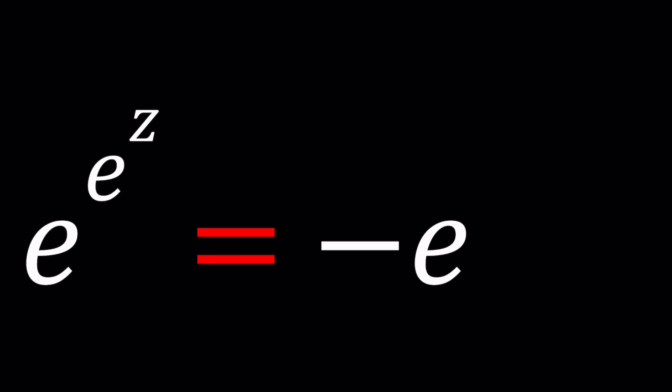This channel is all about complex numbers and in this video we're going to be solving a very interesting exponential equation with complex numbers. You probably know the exponential function exp, also known as e to the z, but we have like a double exponentiation here. We have e to the z and then e to the that, and the answer is negation of e, the opposite of e.